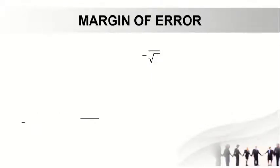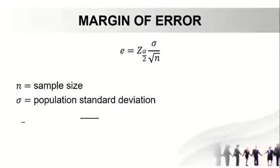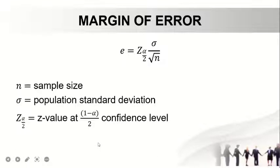Next, margin of error. If we have a level of confidence, of course we have margin of error. This is the formula: e equals z sub alpha over 2 times sigma over square root of n, where n stands as the sample size, then the small sigma is the population standard deviation, and the z sub alpha over 2 is the z value at that confidence level.